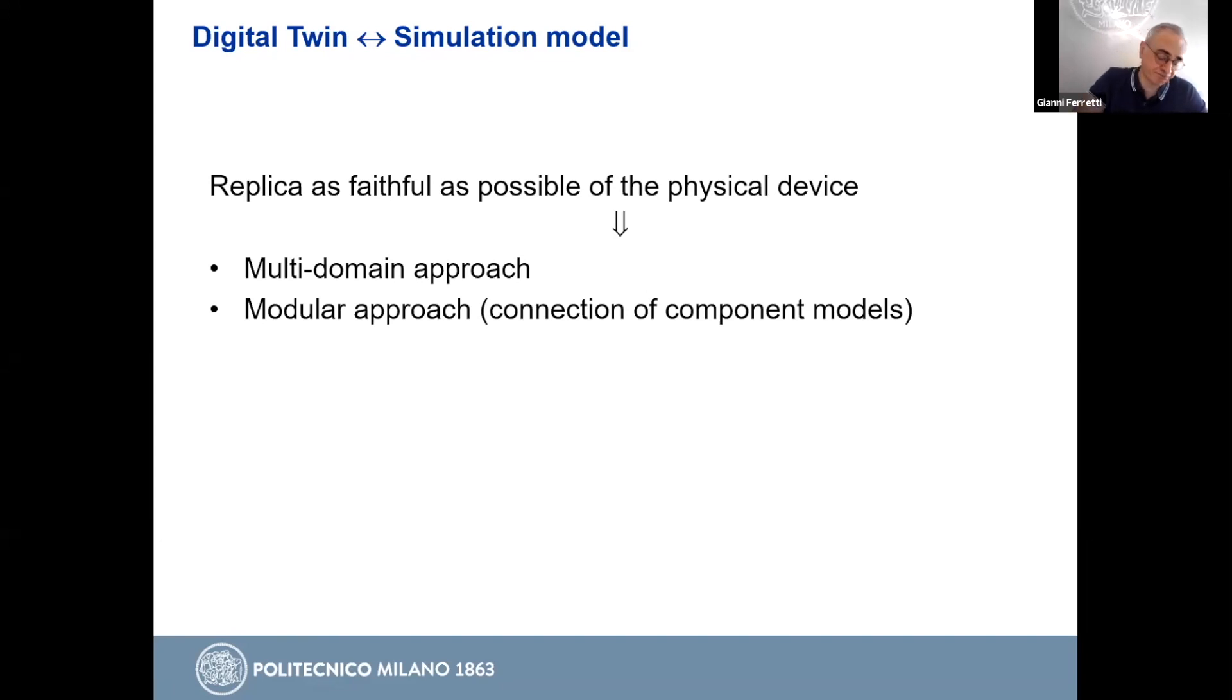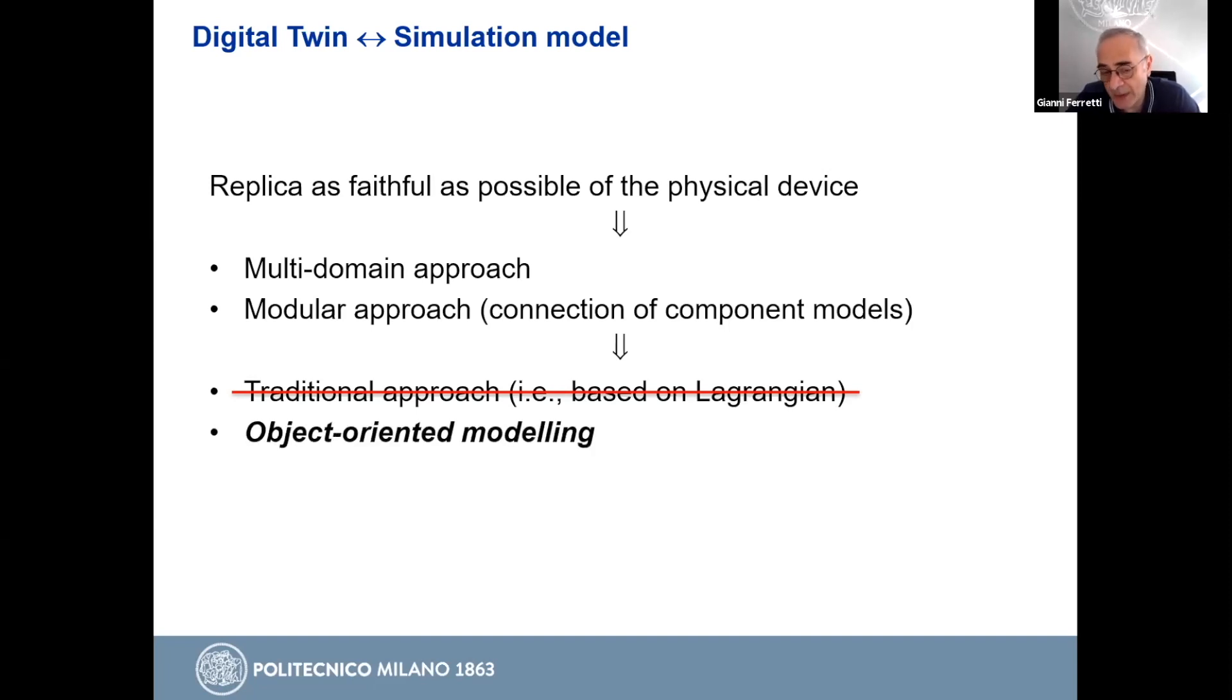In the case of parallel manipulators, this does not allow a traditional approach based on Lagrangian, in the sense that with the Lagrangian approach, you have to model your mechanical system as a whole. You are not allowed to model a single component. And so, in our opinion, the solution is to apply object-oriented modeling as allowed by the Modelica language. So we try to develop the models of parallel manipulators by exploiting largely the modular approach allowed by object-oriented modeling.